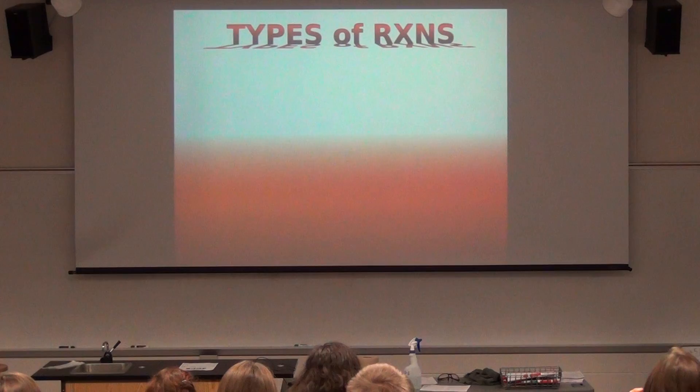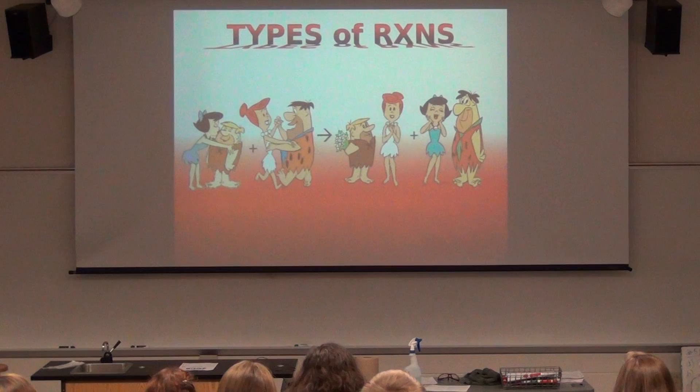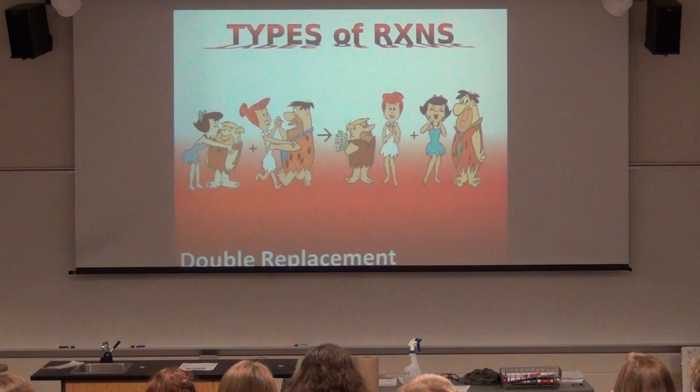Sometimes there's a TV show — Wife Swap on CBS — where two different couples swap. Instead of one switching, there are two switching. So that is considered a double replacement. Those are four of the five types of reactions. The fifth is combustion.